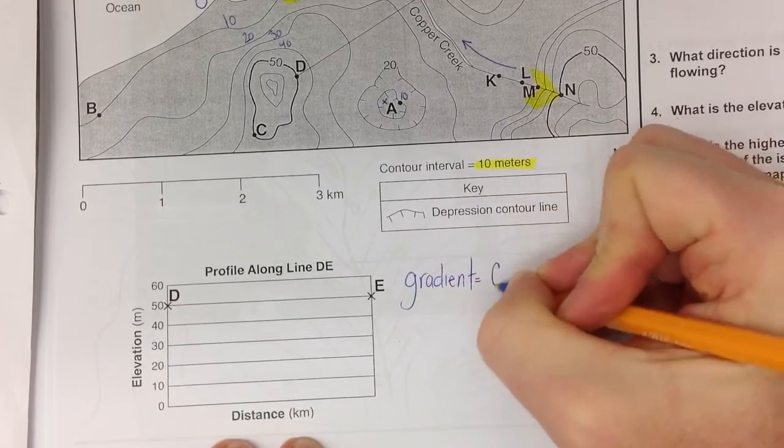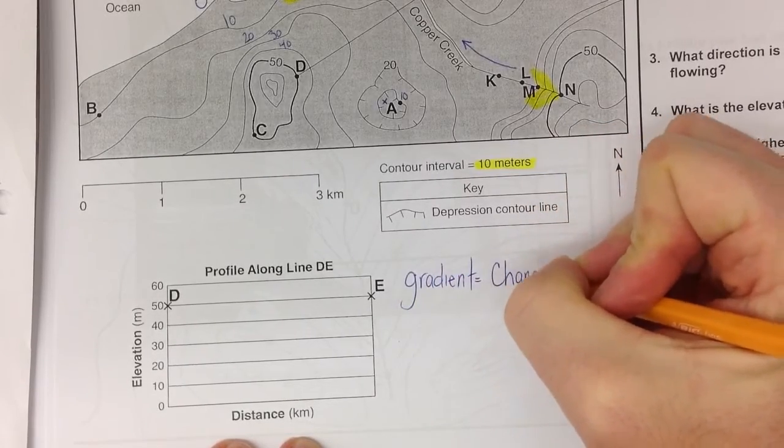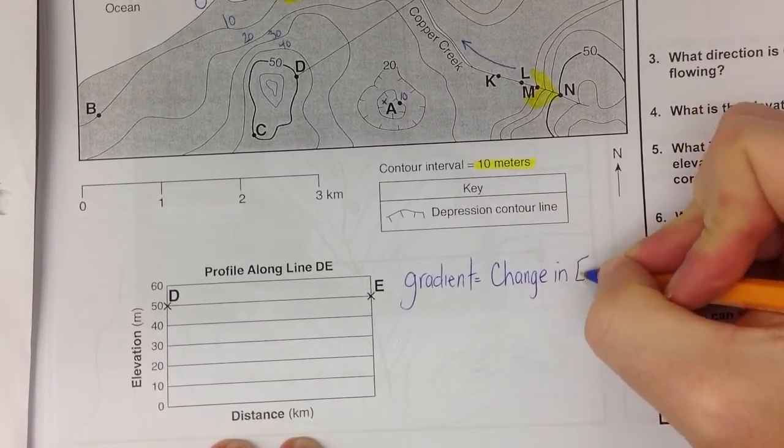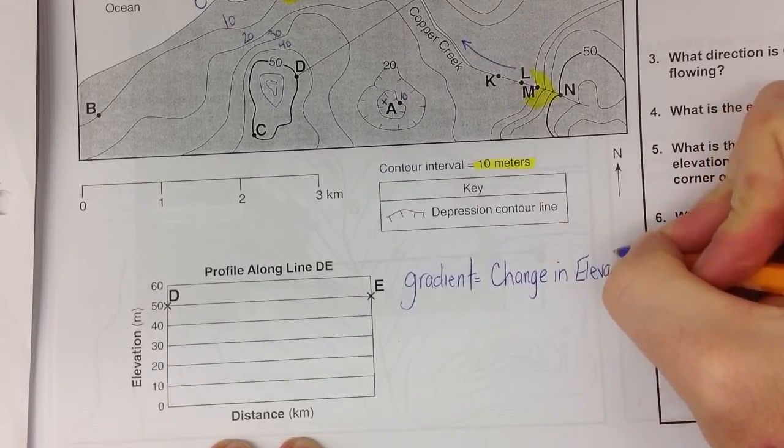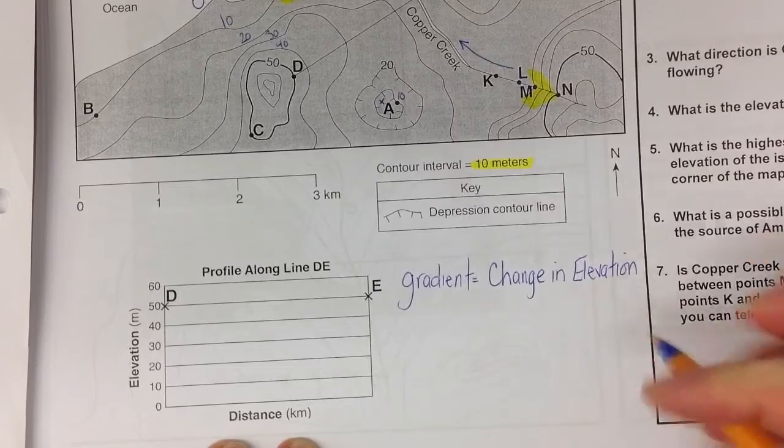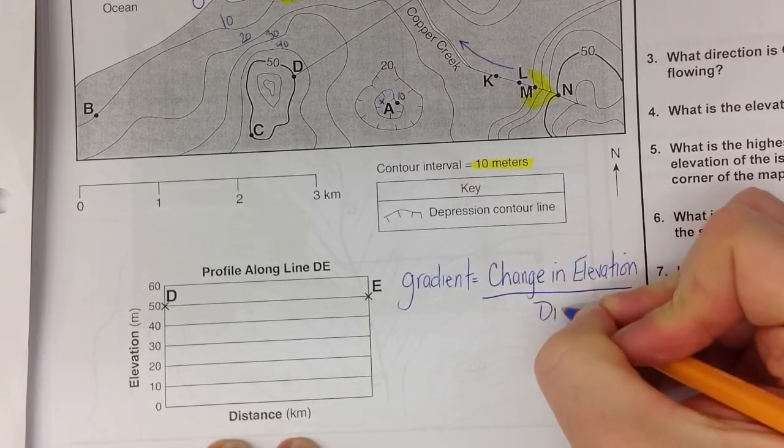Gradient equals your change in field value. Now, on a topographic map, change in field value is going to be change in elevation. Your field value is going to be elevation. That's what we're measuring. Divided by the linear distance between the two points.